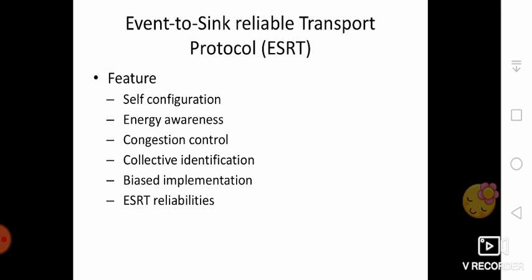Energy awareness: minimum possible energy consumption can be achieved by reducing reporting rates. Congestion control: several packet losses may occur due to congestion at the sink node, so a powerful congestion control mechanism is used to reduce energy consumption, particularly at the sink node. Collective identification: sink nodes show interest in collecting information from other sensor nodes and will send collective information to the record node or center, providing implementation of the event-to-sink model and thereby reducing network overhead.